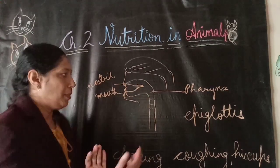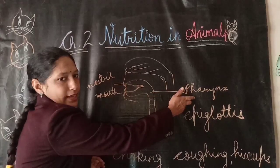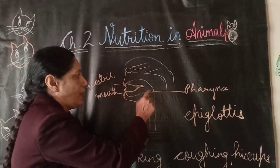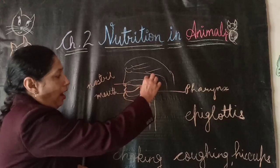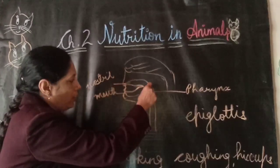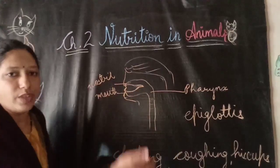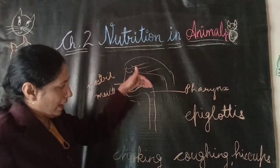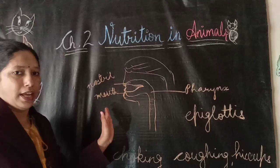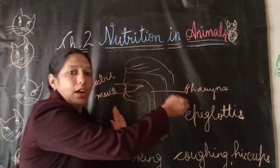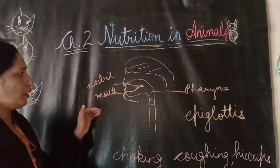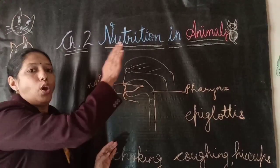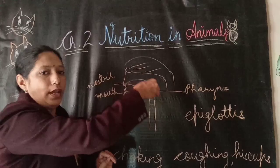The food pipe and windpipe lie close to each other but share a common passage called the pharynx. Where air going through the nostrils into the windpipe and food going towards the food pipe meet, there is a flap-like valve called the epiglottis. When air is going towards the pharynx, the epiglottis closes the food pipe so air enters the trachea. When food reaches the pharynx, the epiglottis closes the windpipe so food goes into the food pipe.